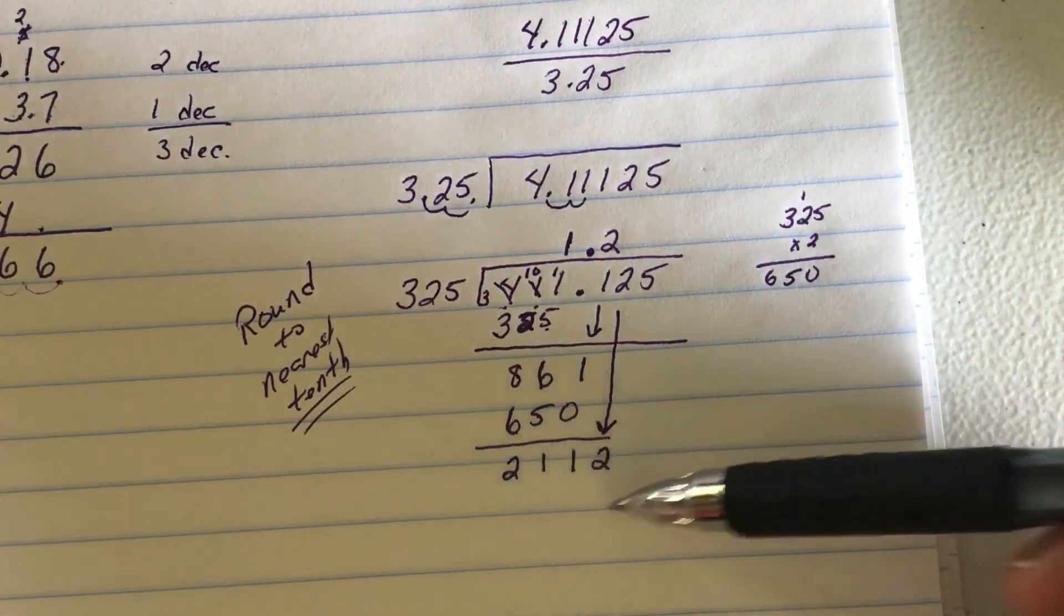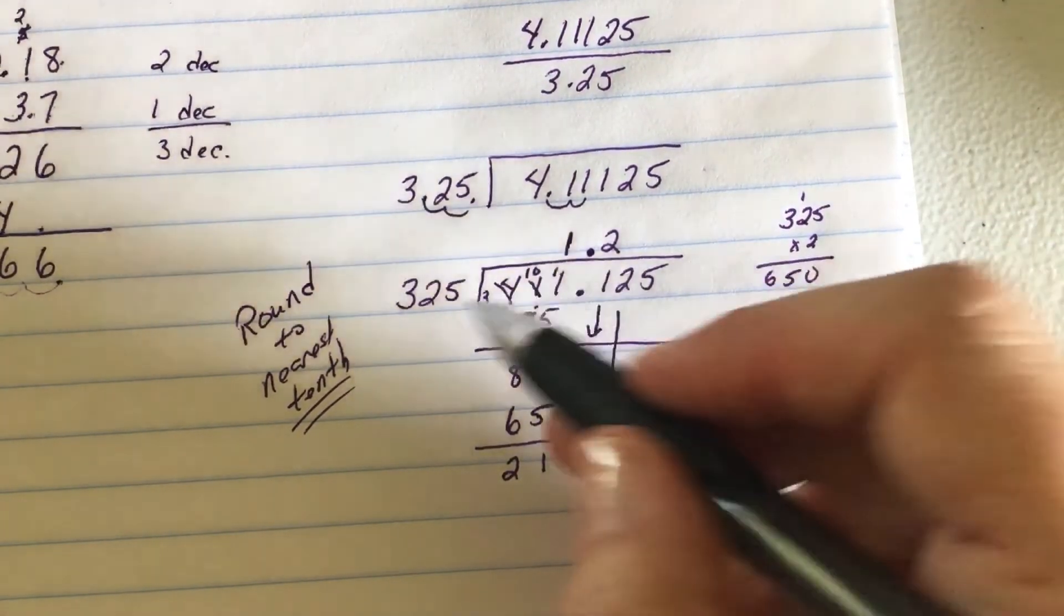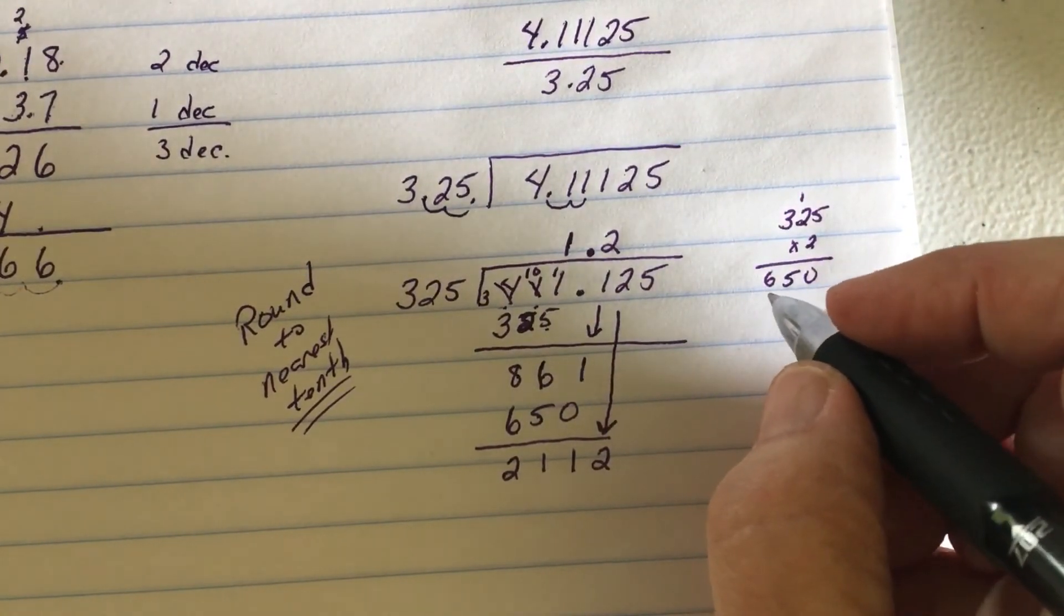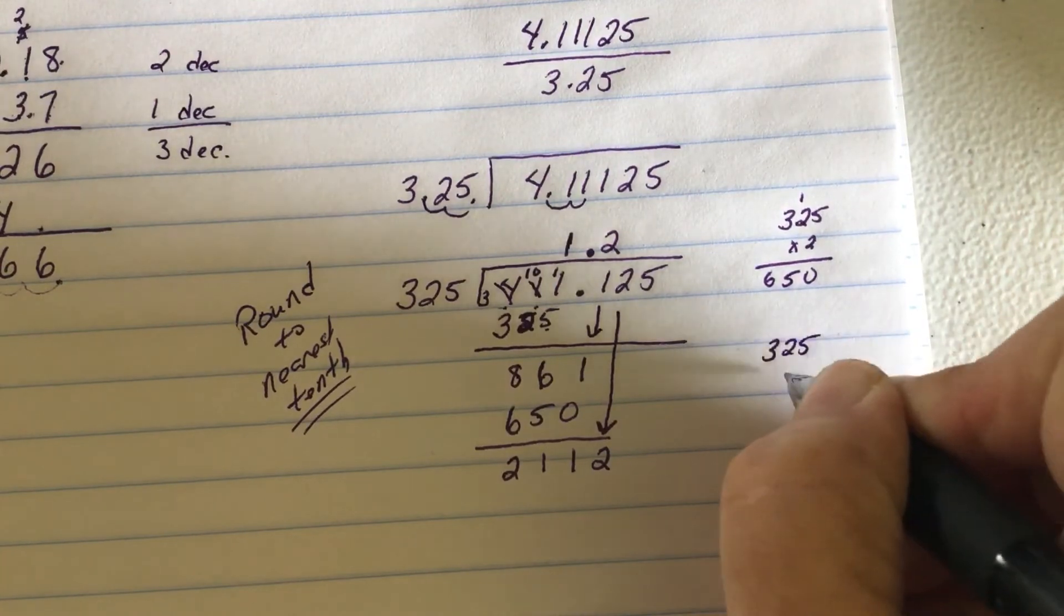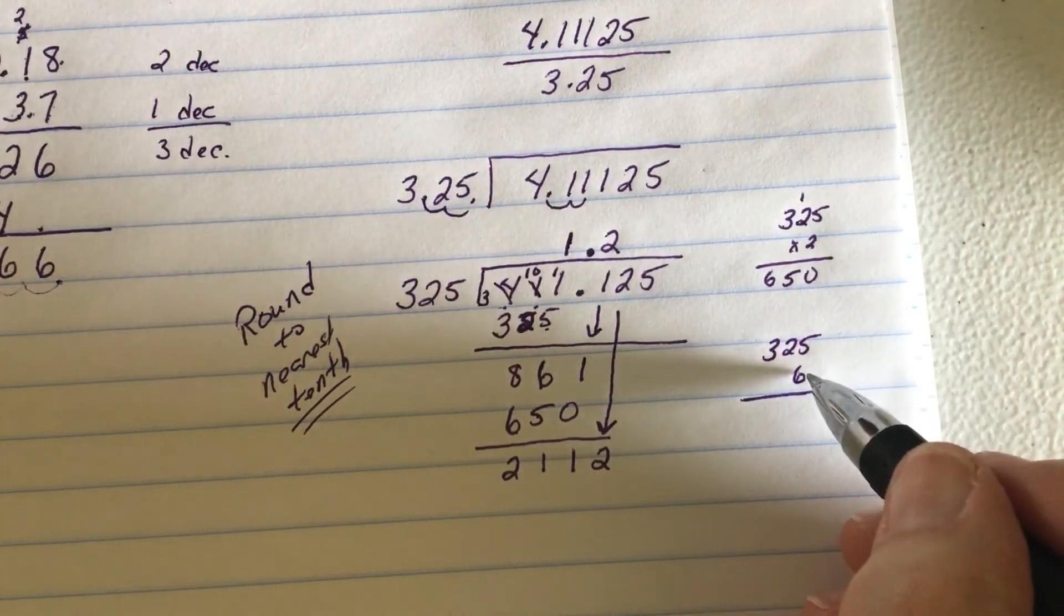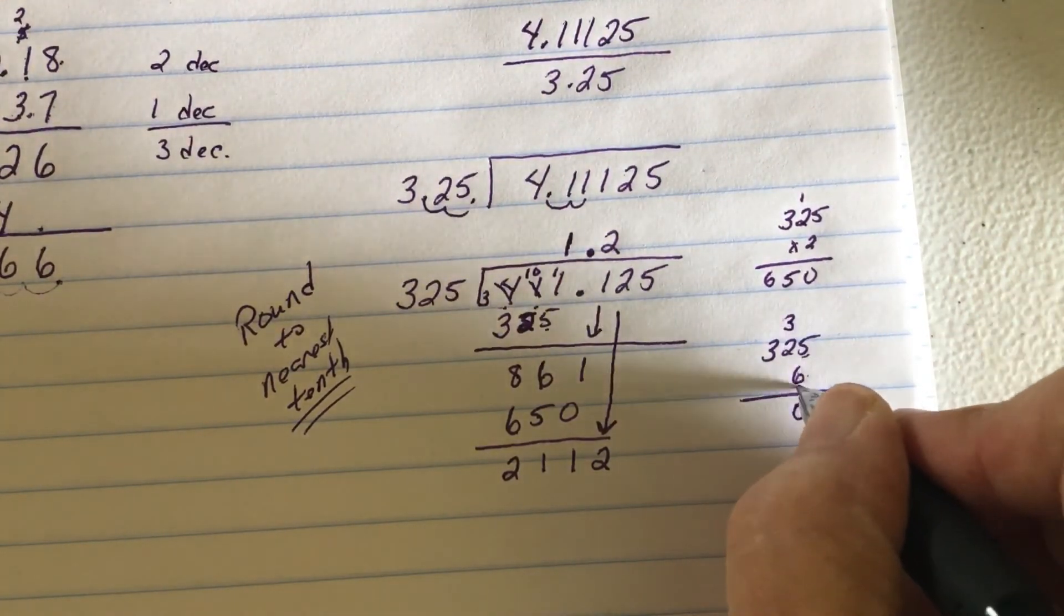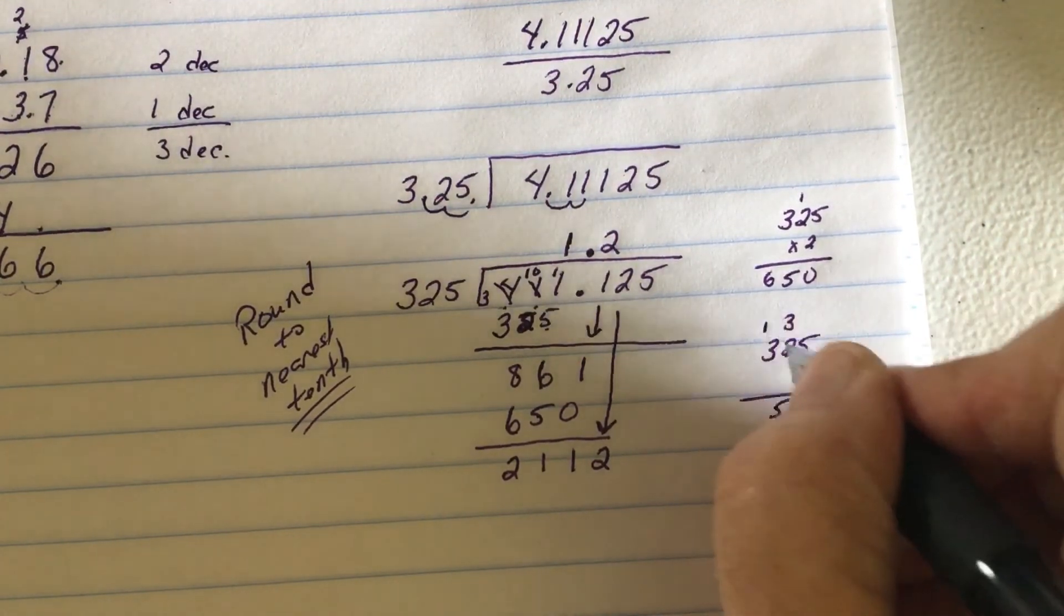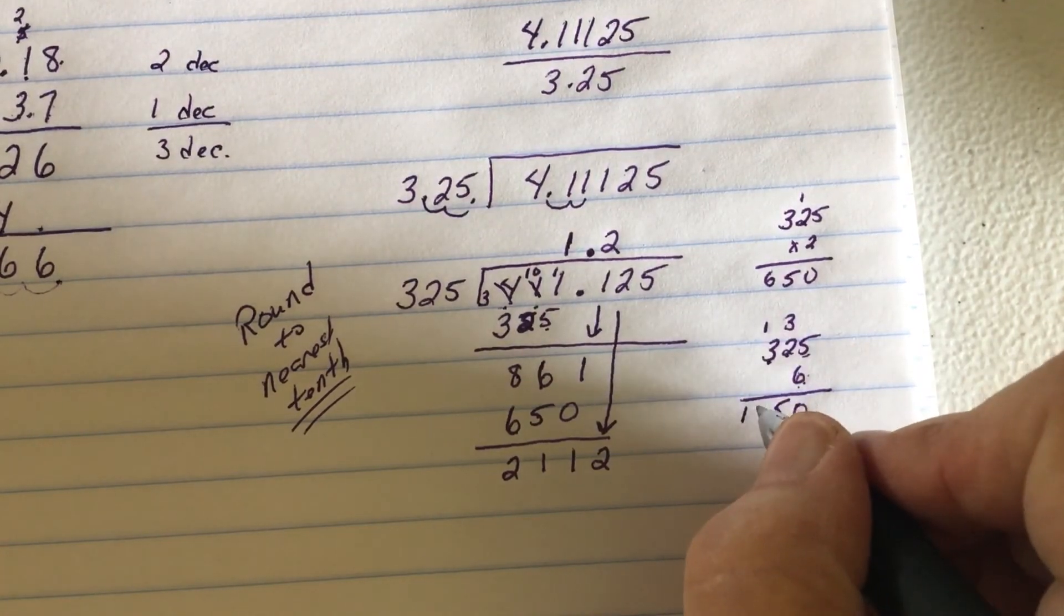So, 2112 divided by 325. Well, I'm betting that's 6, because 6 times 3 is 18. That's kind of close. That's how I get it, guys. Just so you know, how to know where to start. It's a rounding, another type of rounding trick. So, 6 times 5 is 30. Carry the 3. 6 times 2 is 12. Plus 3 is 15. Carry the 1. 6 times 3 is 18. Plus 1 is 19.